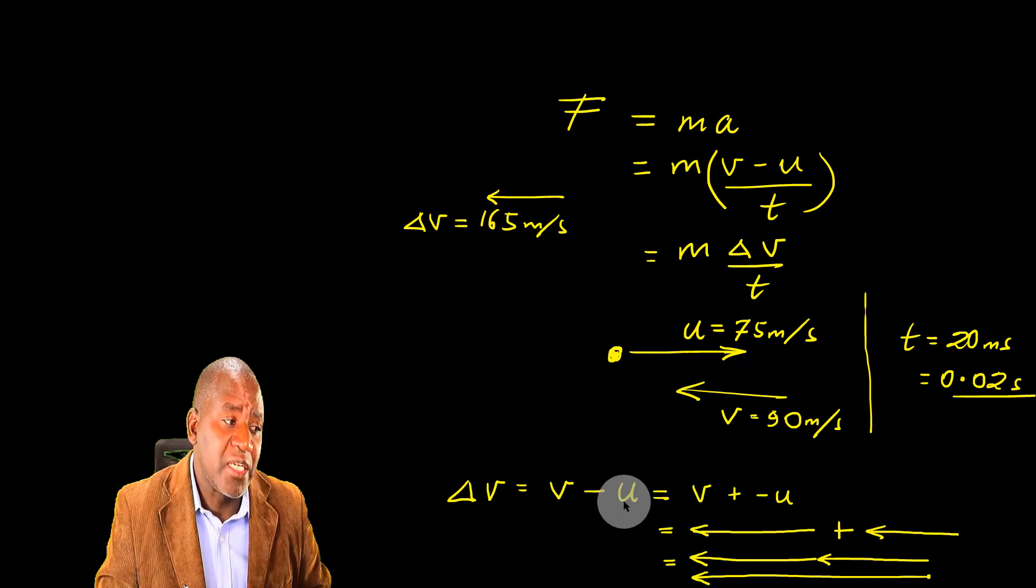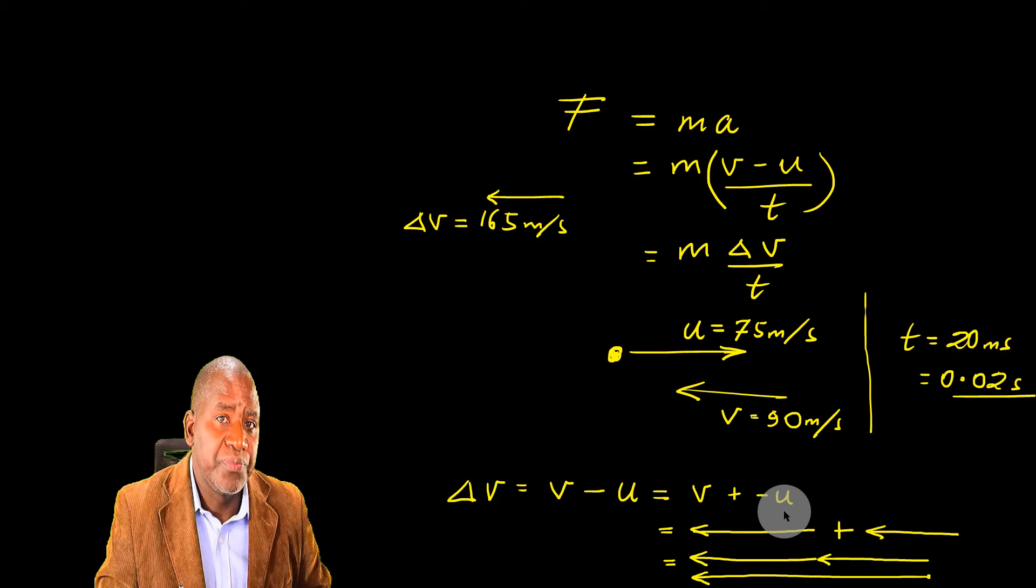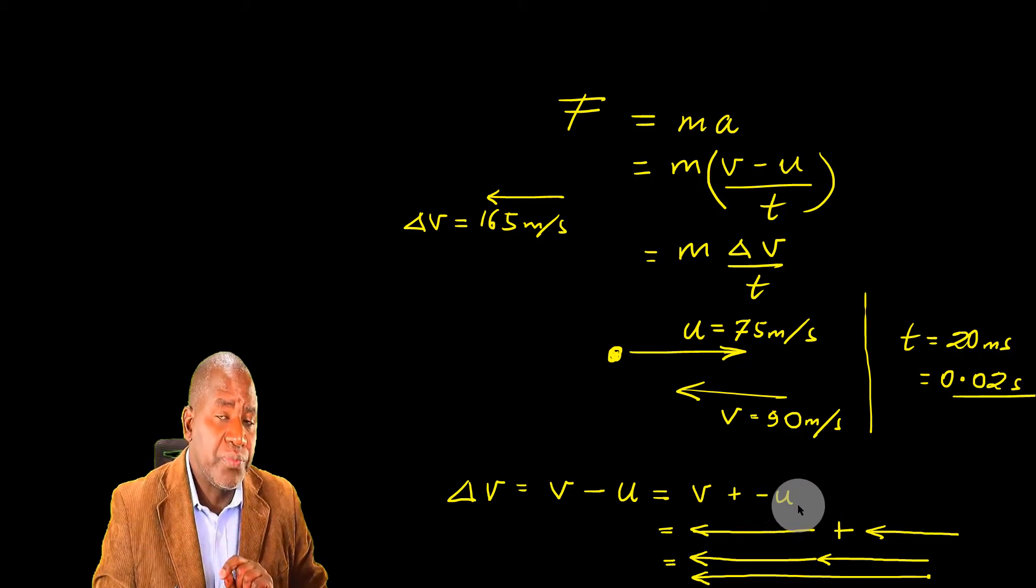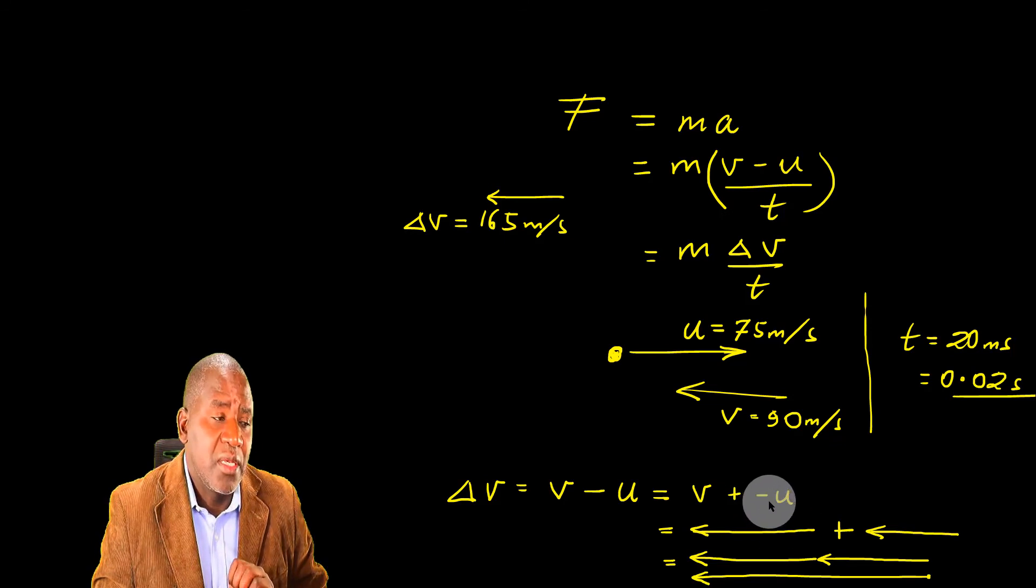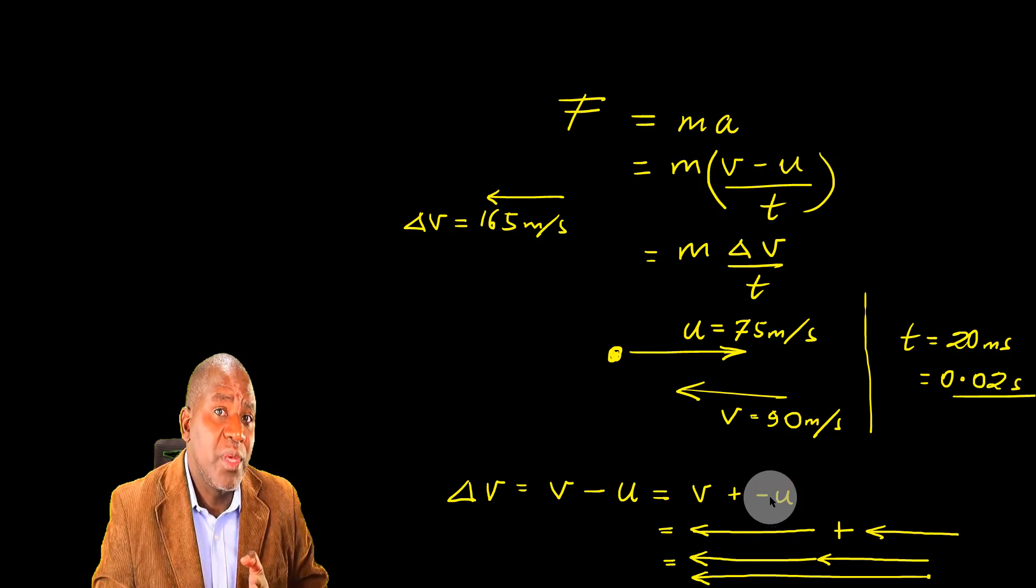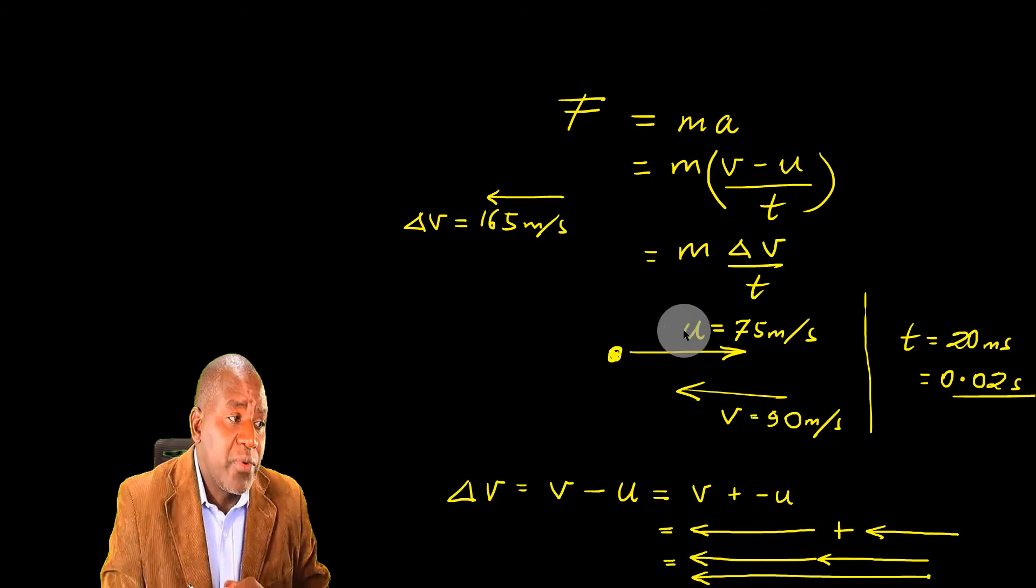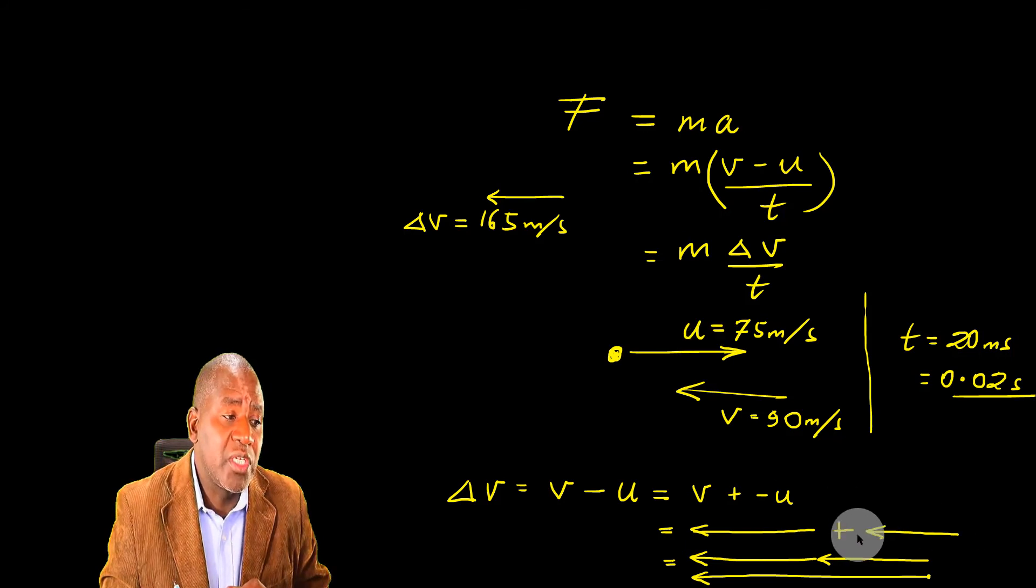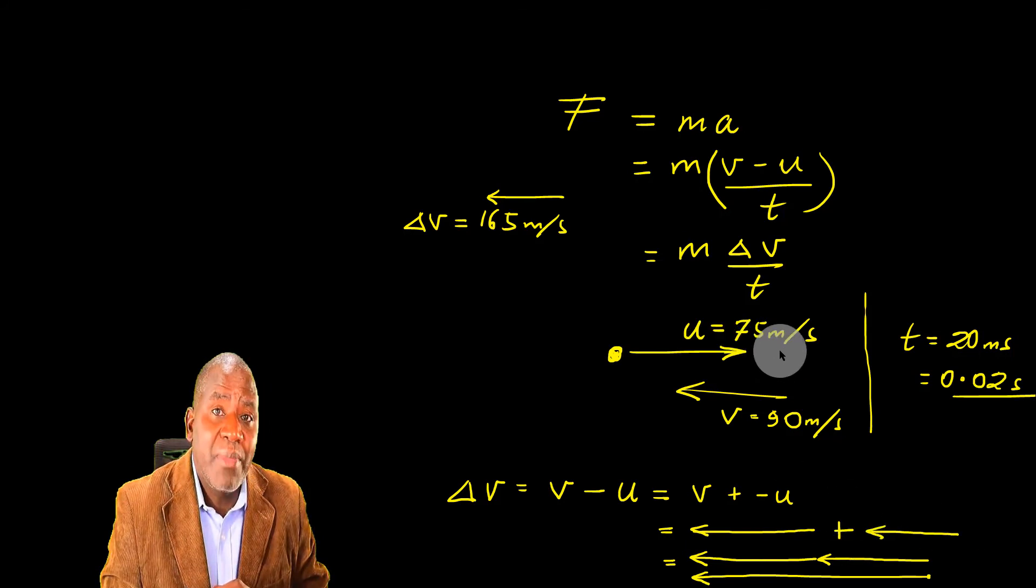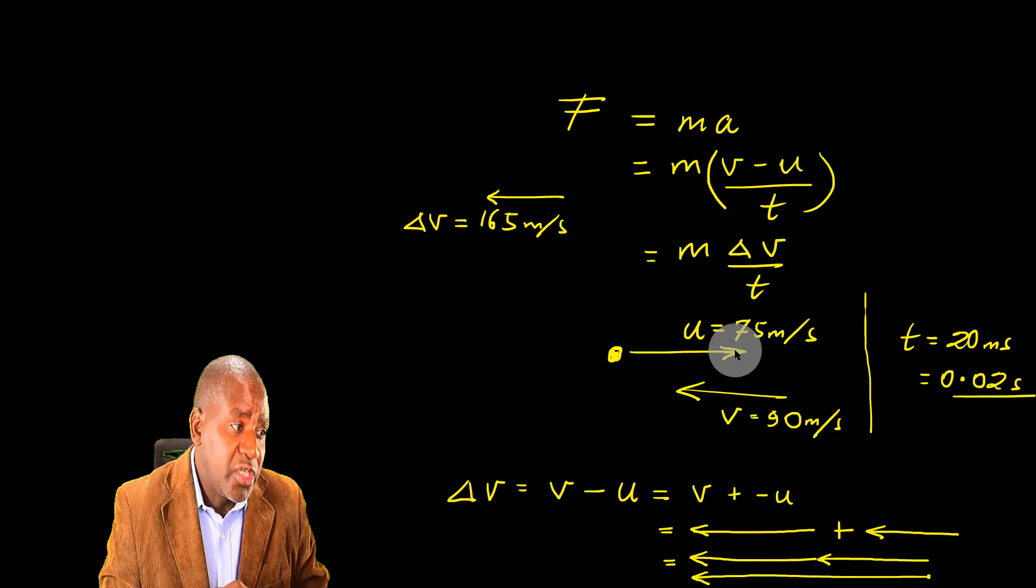Remember, when you're asked to calculate change in a vector, find a way of converting that if it doesn't have a positive sign, find a way of converting that into a sum. And here I have V minus U. V minus U is the same as V plus minus U. Point number two. When a vector carries a negative sign, it means that its direction has changed. It is in the opposite direction to the direction that was taken to be positive. For example, U is to the right. If I give U a negative sign, then it must point to the left. But it will carry the same magnitude.